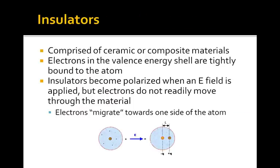Insulators, on the other hand, have tightly constrained valence electrons. Insulators are usually ceramics, composite materials, or in some cases plastics. The electrons in the valence shell are tightly bound to the atom either through bonding relationships, or because their valence shell is nearly or fully filled. In insulators, there are no free electrons to move in response to an electric field.